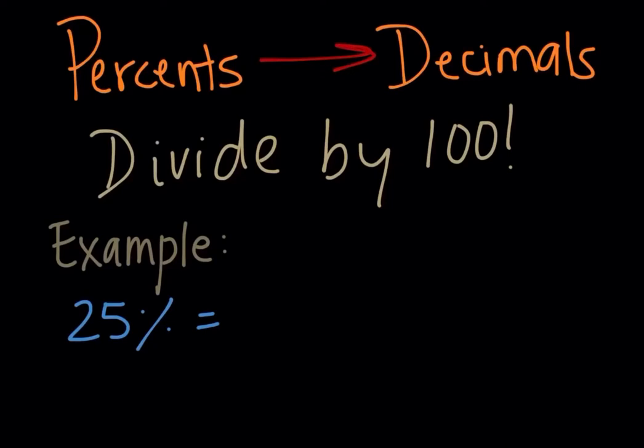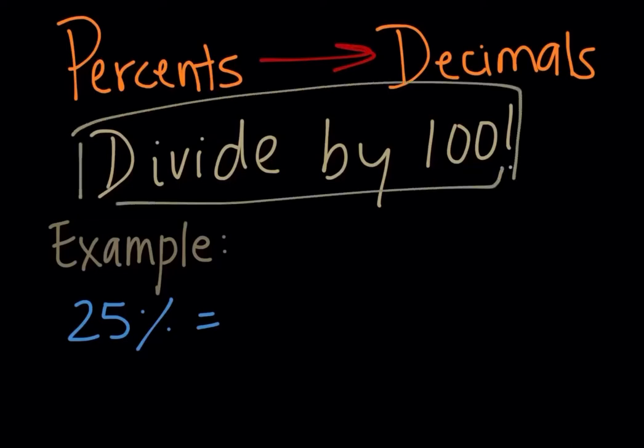Now if we need to convert from percents to decimals, again it's very straightforward. It's the opposite of the other one. You divide it by 100. So you have that, and then you divide it by 100, just the opposite from decimals to percents. So you divide it by 100 and you get 0.25.